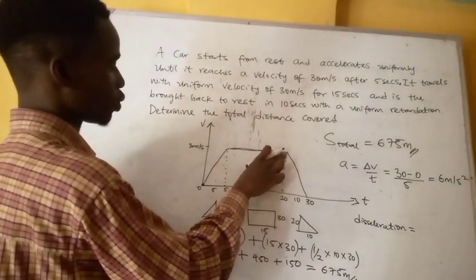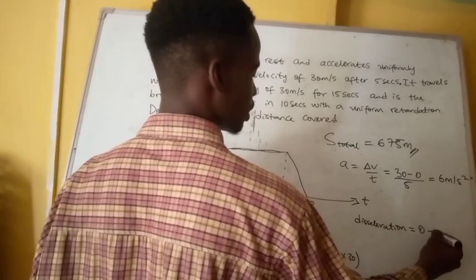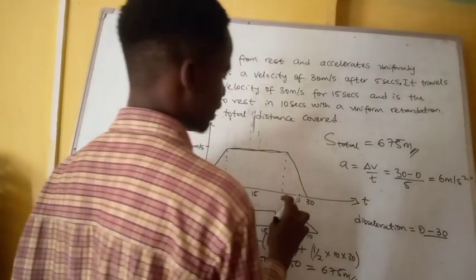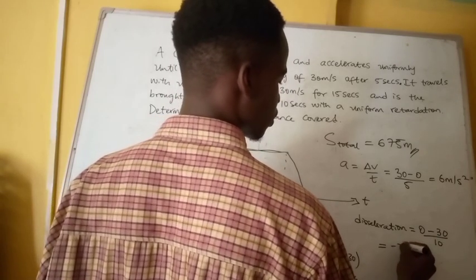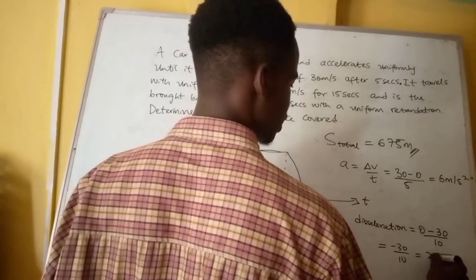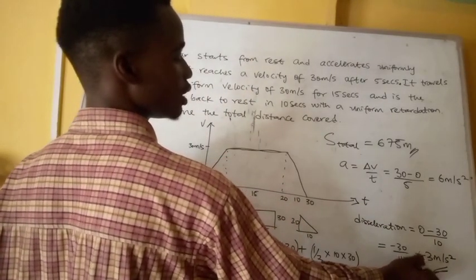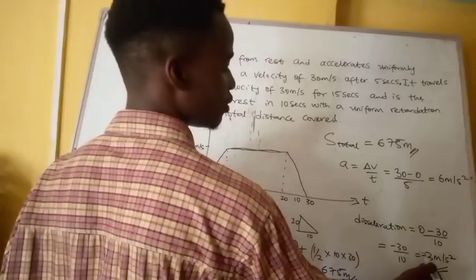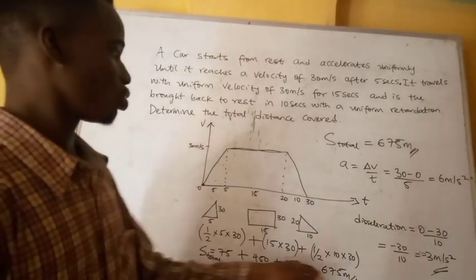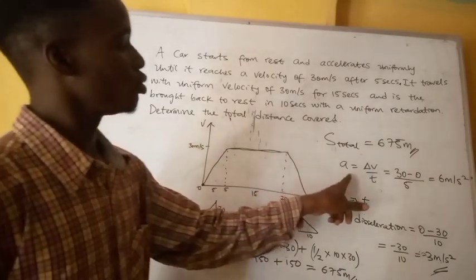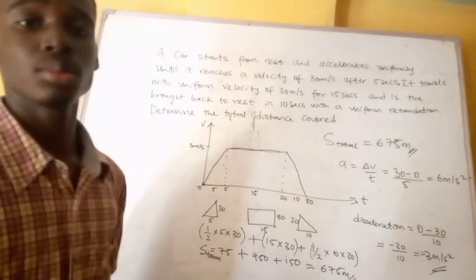To calculate deceleration: the velocity at the start of that phase was 30 m/s and at the end is zero. So deceleration = (0 − 30) / 10 = −3 meters per second squared. The negative sign signifies that it is deceleration. So to find total distance we use the area method, for acceleration we use change in velocity over time, and similarly for deceleration.